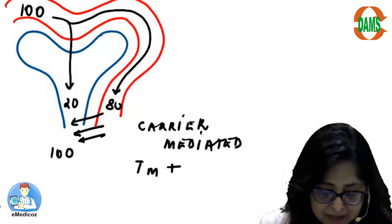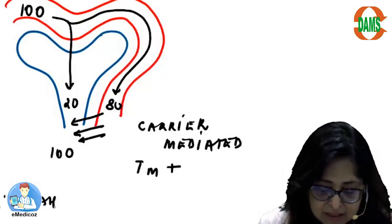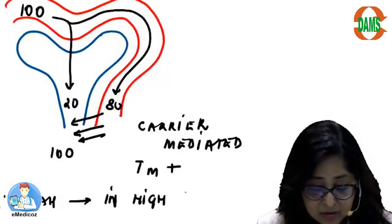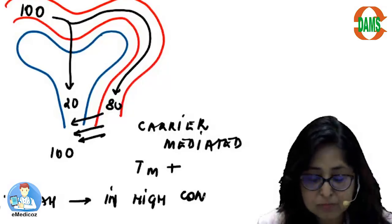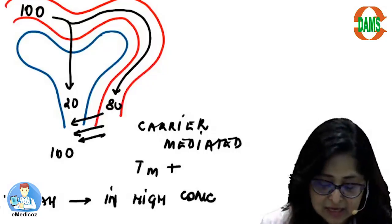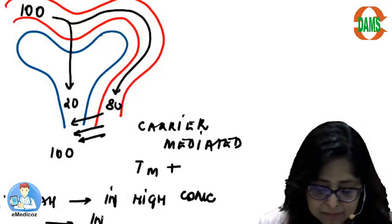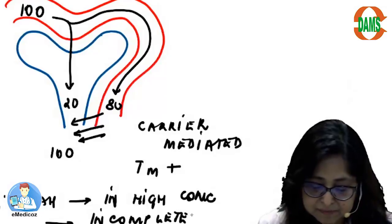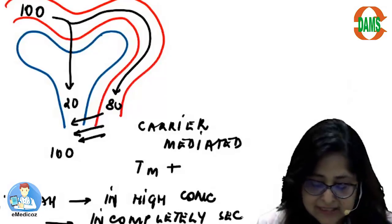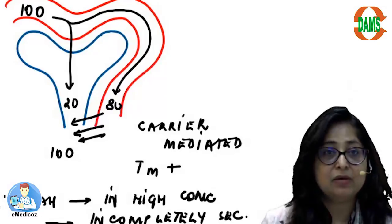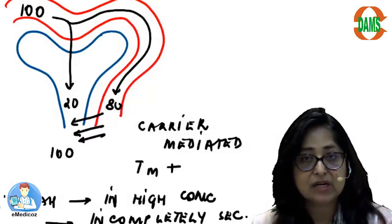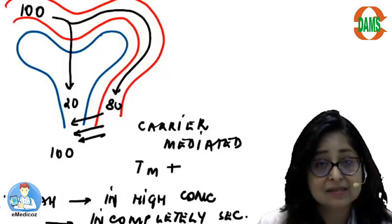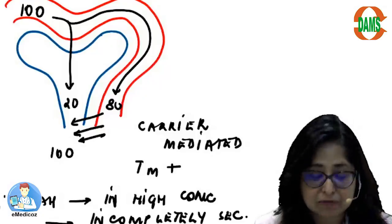Therefore, para-aminohippuric acid in high concentration — more than 20 mg per deciliter — is incompletely secreted. We can only take the clearance of para-aminohippuric acid in low concentration for the assessment of renal plasma flow.